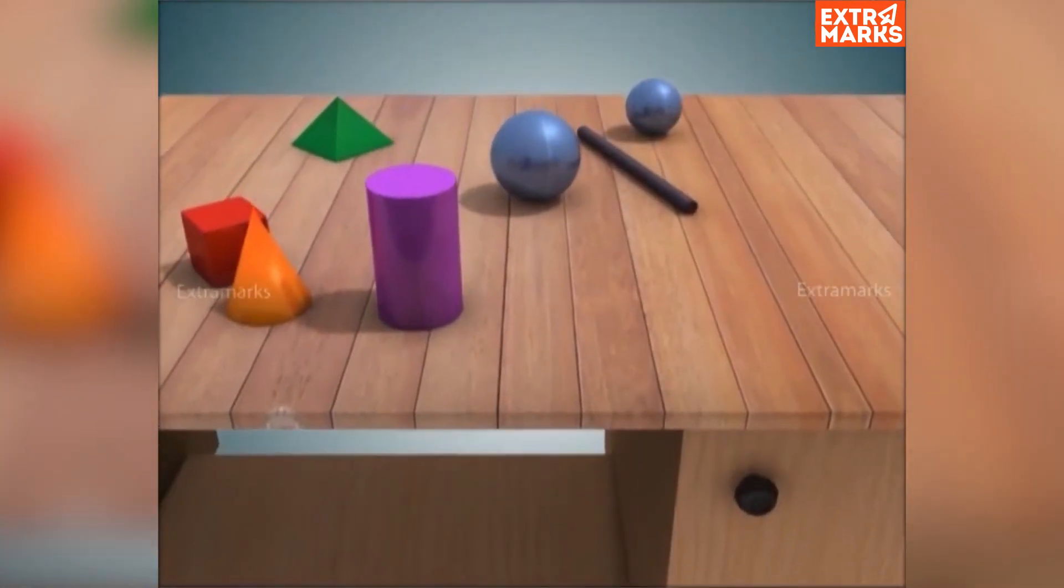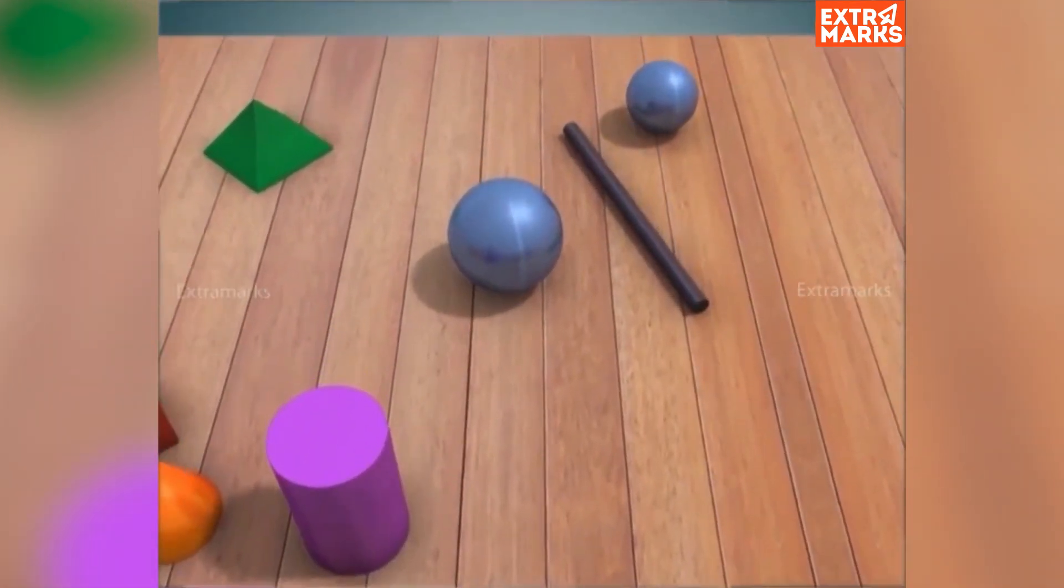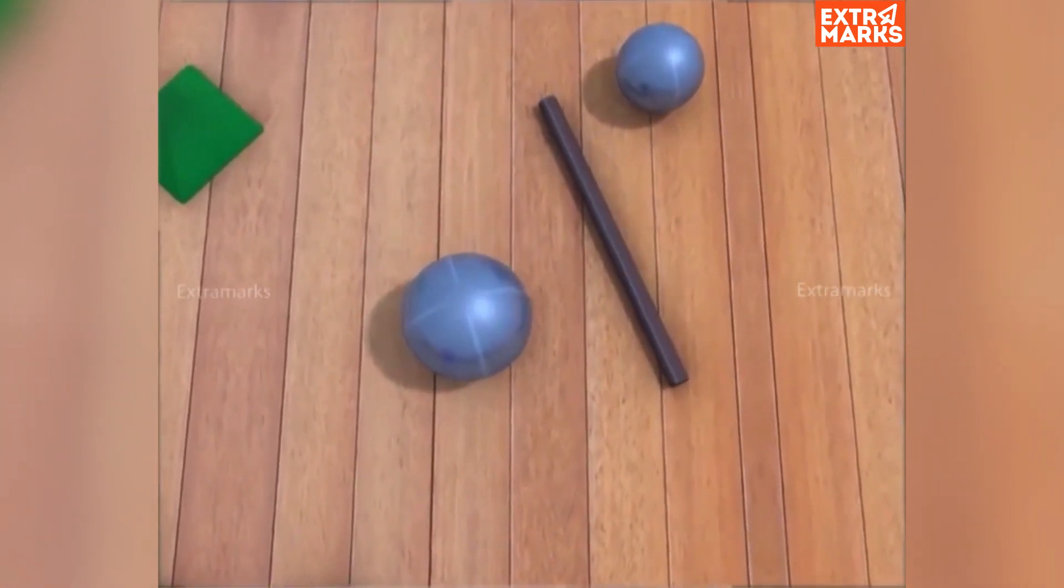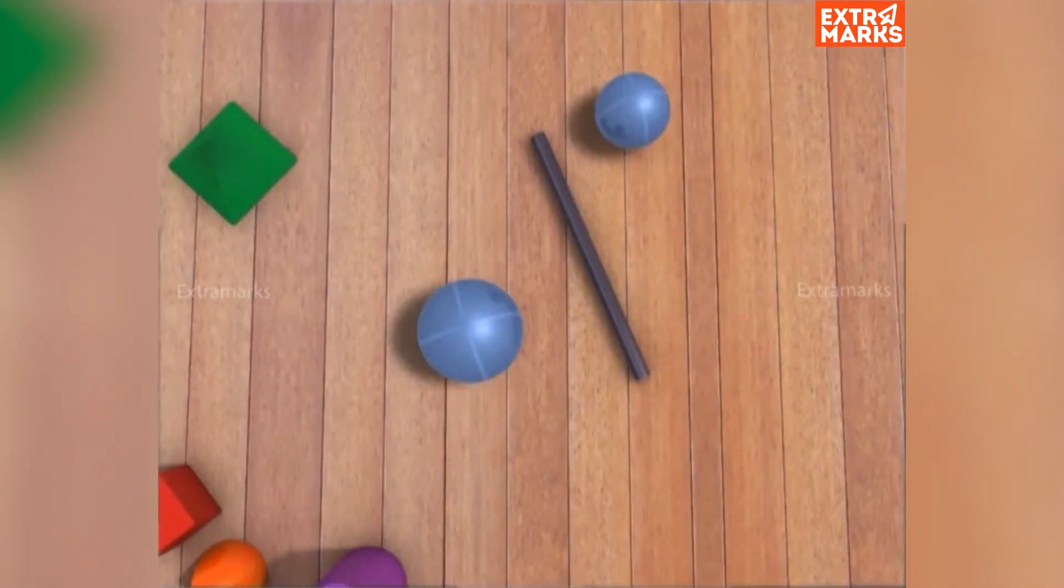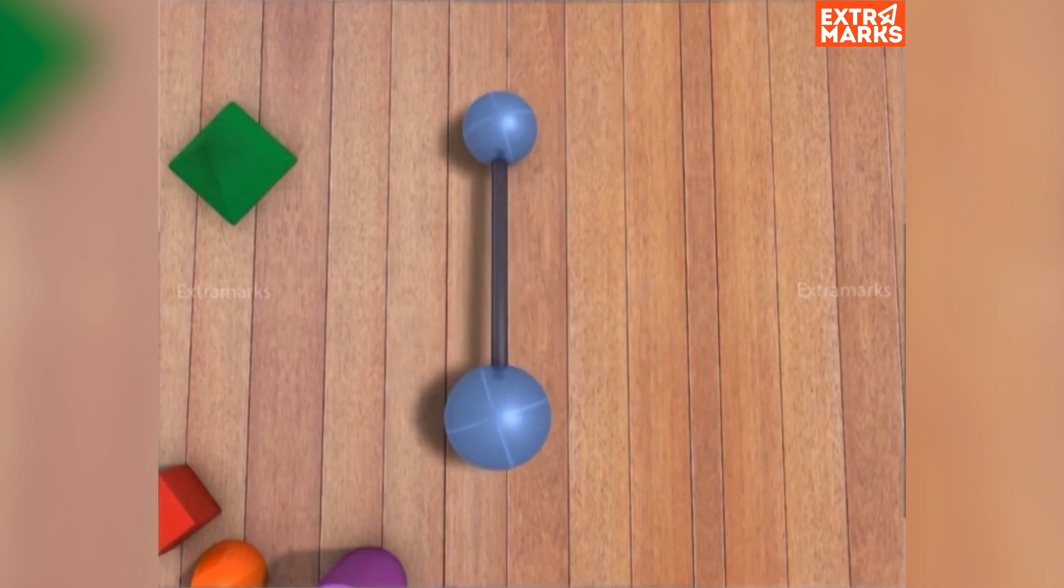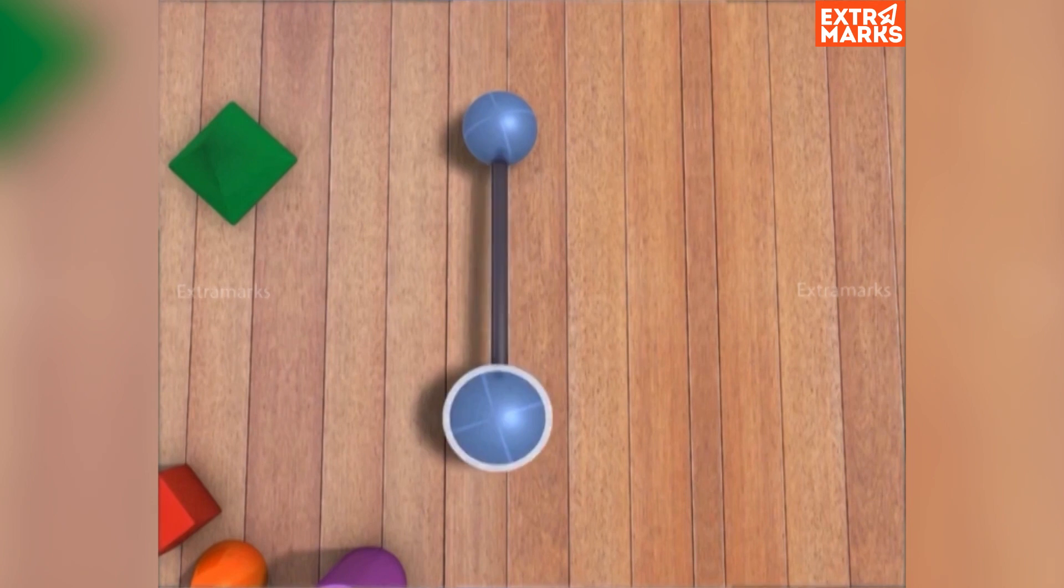The center of mass of a body is a point at which the entire mass of a body is assumed to be concentrated. Here, two particles of different mass are connected by a light rigid rod. The center of mass of the system is located somewhere on the line joining the two particles and is closer to the heavier particle.